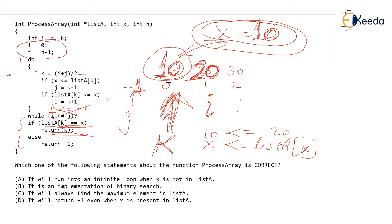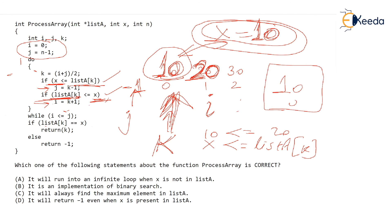That means this is a correct implementation of binary search. The twist in this question was the use of less than or equal to and greater than or equal to. When the value is genuinely found, x will be less than or equal to the kth element, and the kth element will be less than or equal to x — because they are equal. So both conditions become true, i crosses over j (j becomes k minus 1 and i becomes k plus 1), and the loop exits. The answer is B — it is a correct implementation of binary search. I appeal to all of you to try a one-element array example yourself. Thank you very much.